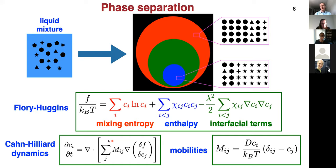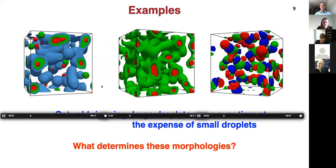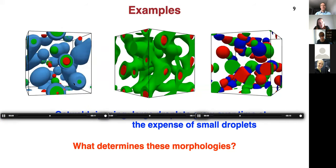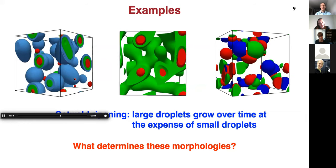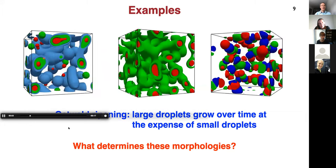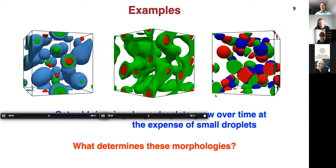I'm going to show a bunch of simulations in 3D with periodic boundary conditions. We're going to change the interaction matrix Chi_ij and the initial concentration C_i, starting with roughly uniform concentration in space plus a little bit of noise. Here are some representative solutions. You can see that the morphologies in these simulations are quite different. Also, all of these morphologies coarsen over time — small droplets or structures disappear while large structures grow, a process called Ostwald ripening.